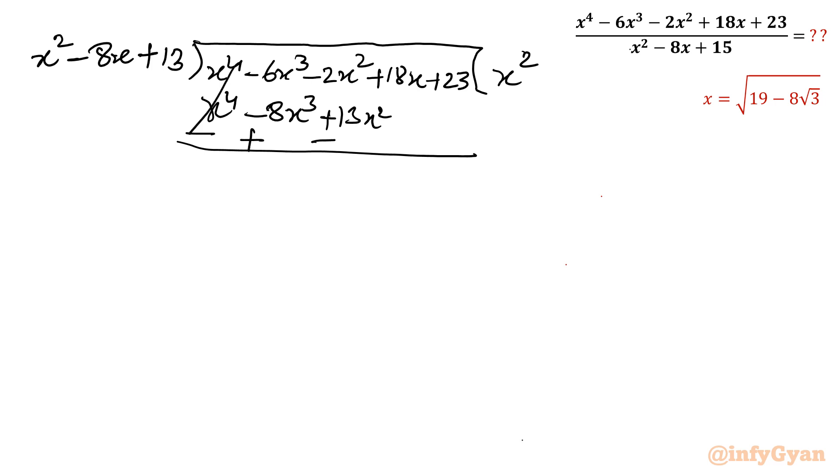This term will get over. -8x^3 - (-6x^3) = 2x^3, -13 - (-2) = -15x^2. And remaining term as it is unchanged. Now 2x times I will take. As you can see it is 2x^3, minus 16x^2 plus 13 times 2: 26x.